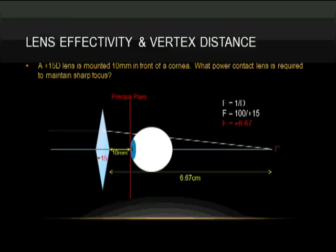Here's an example. A plus fifteen diopter lens is ten millimeters in front of a cornea. What is the power of the similar contact lens? Let's look at the focal point of the lens. A meter divided by plus fifteen is plus 6.67. Since this is a hyperope, that means the far point of the eye is going to be back here.